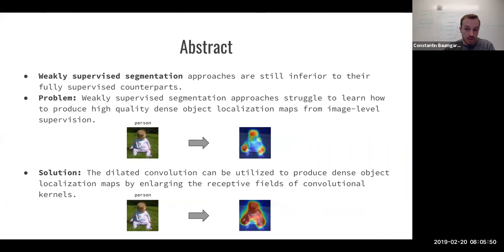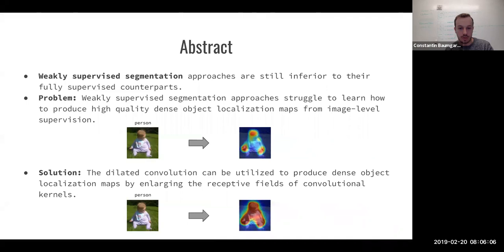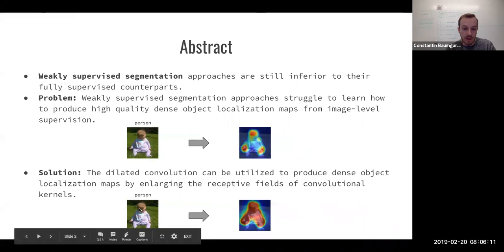The proposed solution demonstrated in this paper is using dilated convolution to produce dense object localization maps by enlarging the receptive field of the convolutional kernel. The key takeaway is that they use dilated convolution to enlarge the receptive fields of the convolutional kernels. Using only weakly supervised data — such as an image of a baby and an image-level label — you can get much more high-quality and dense localization maps.